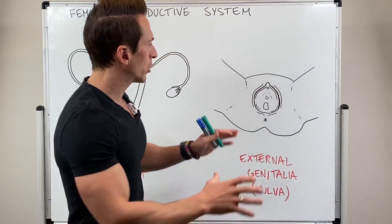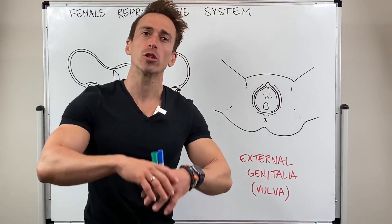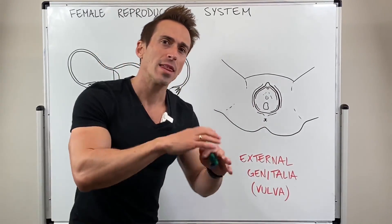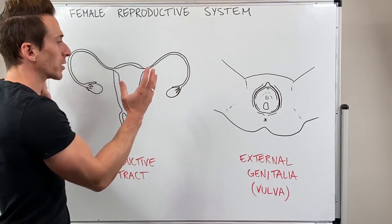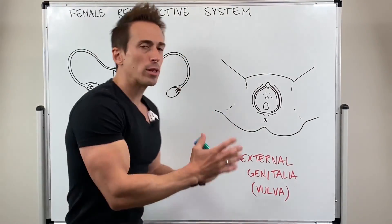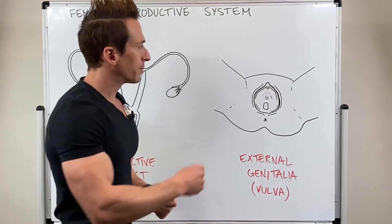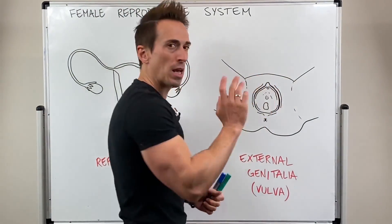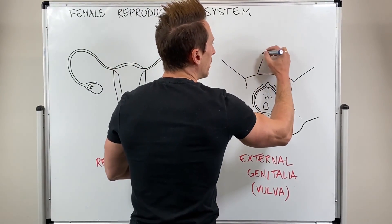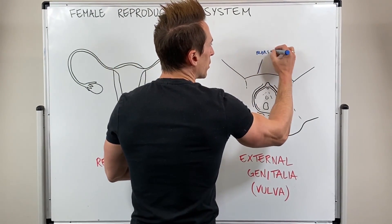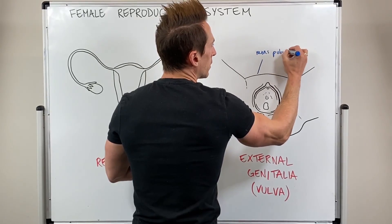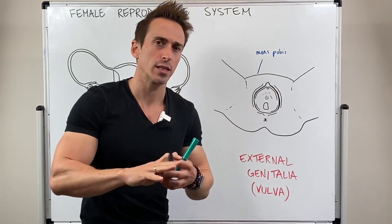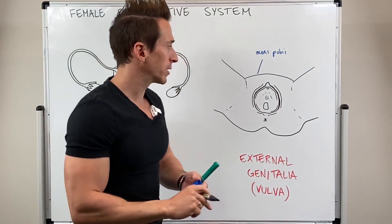To begin with, we should look at the external anatomy, or the external genitalia, also known as the vulva of the female reproductive system, and then we'll move through and have a look at the female reproductive tract. When we look at the external anatomy, first of which you can see that we have what's called the mons pubis. The mons pubis is a fatty pad that overlays that of the pubic symphysis — so the very front of the pubis itself.